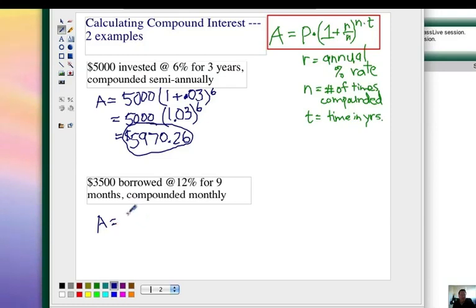A equals, the principal is $3,500. In the formula, it's 1 plus. What's the interest rate? 12%, and that's compounded monthly. Well, how many times does that mean you compound it in a year? That would be 12. So 12% divided by 12 is actually 1%. In other words, every time it's compounded, it's 1% that's added in.